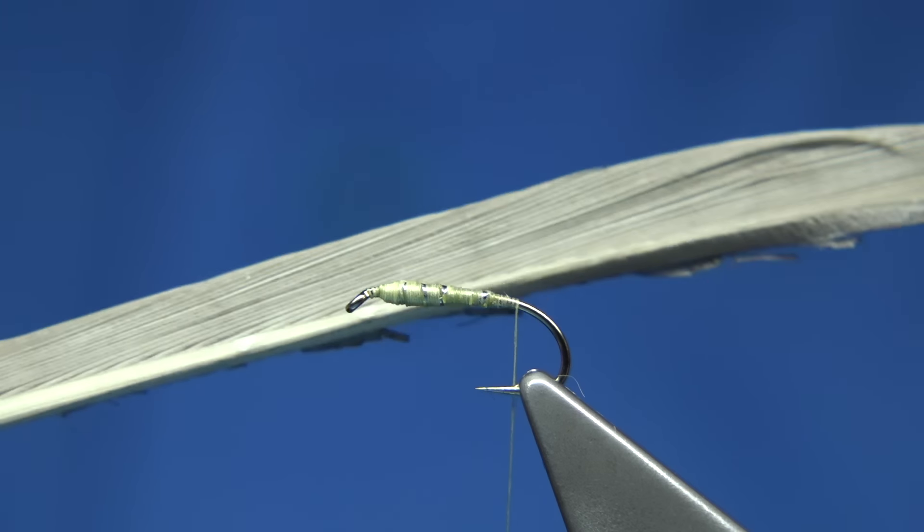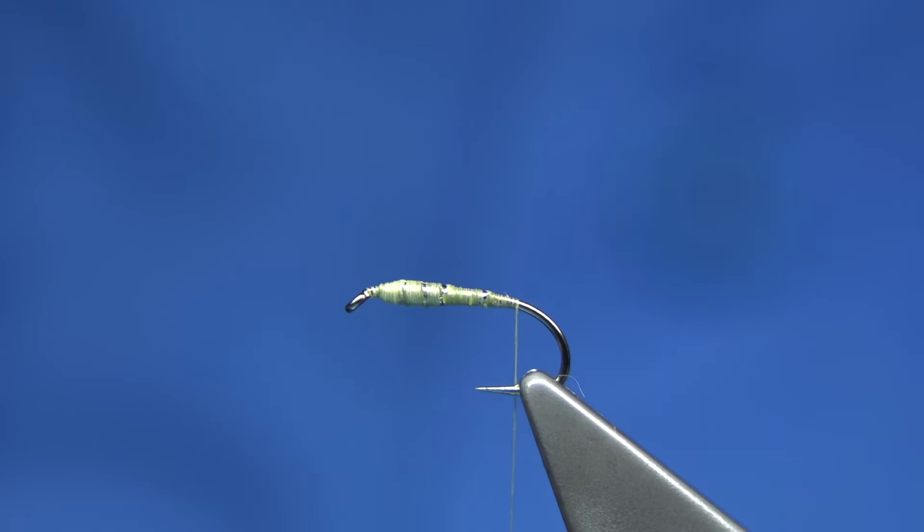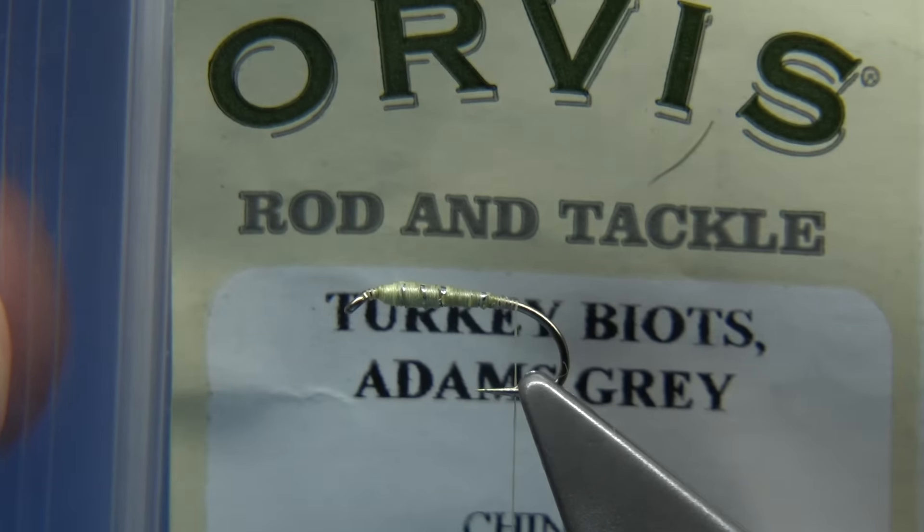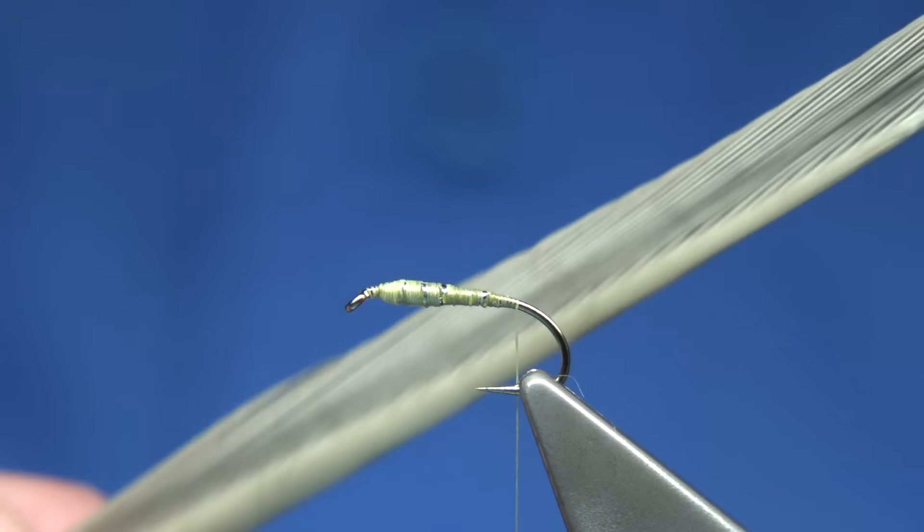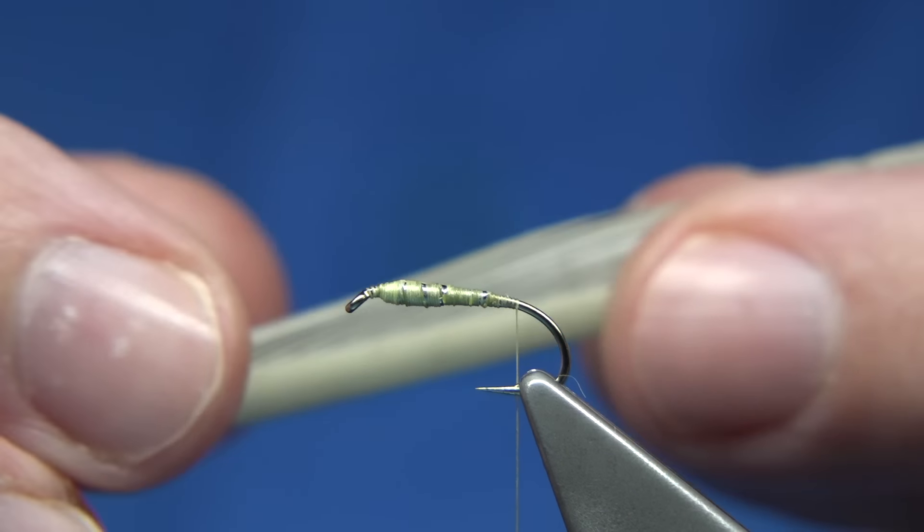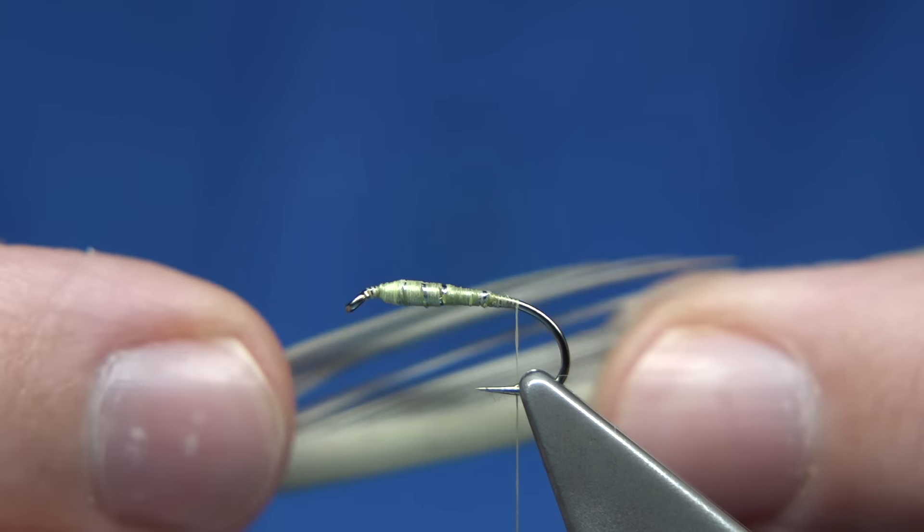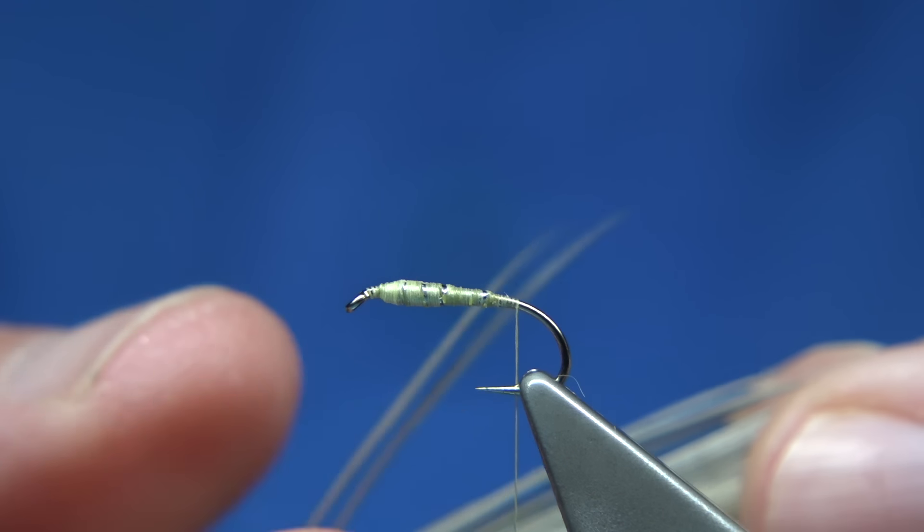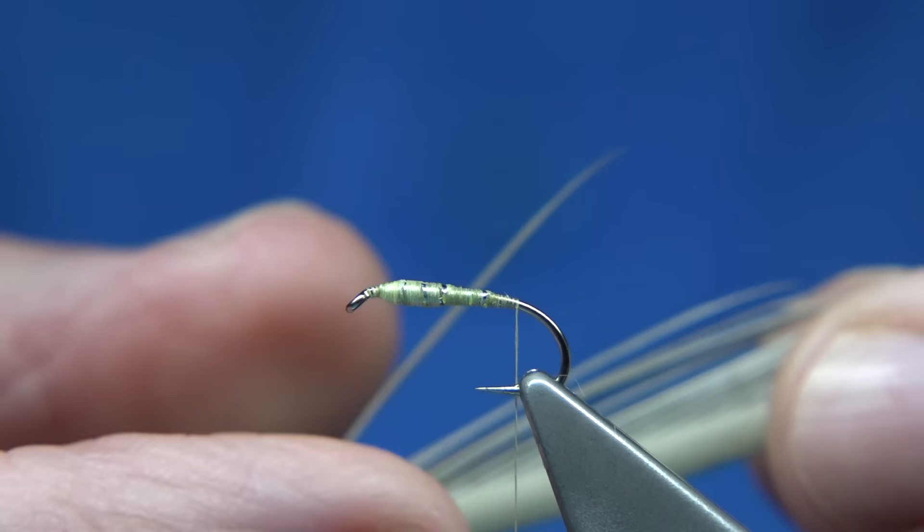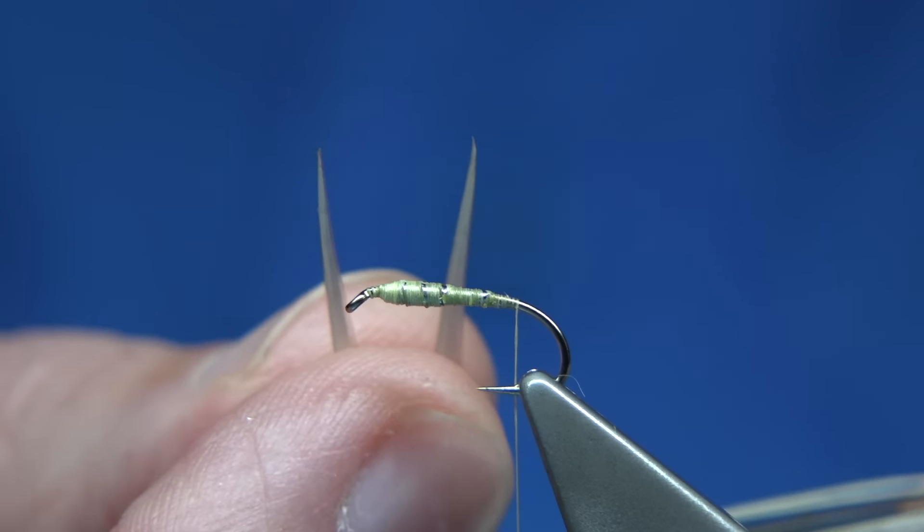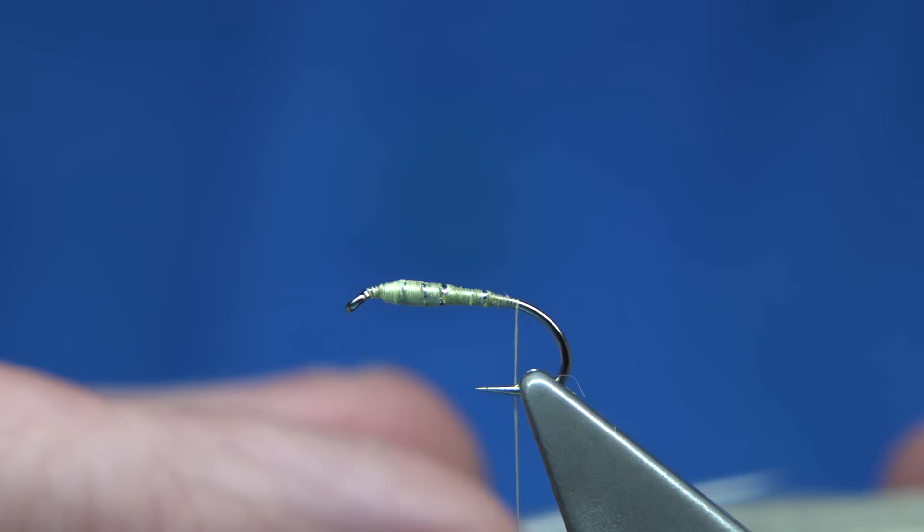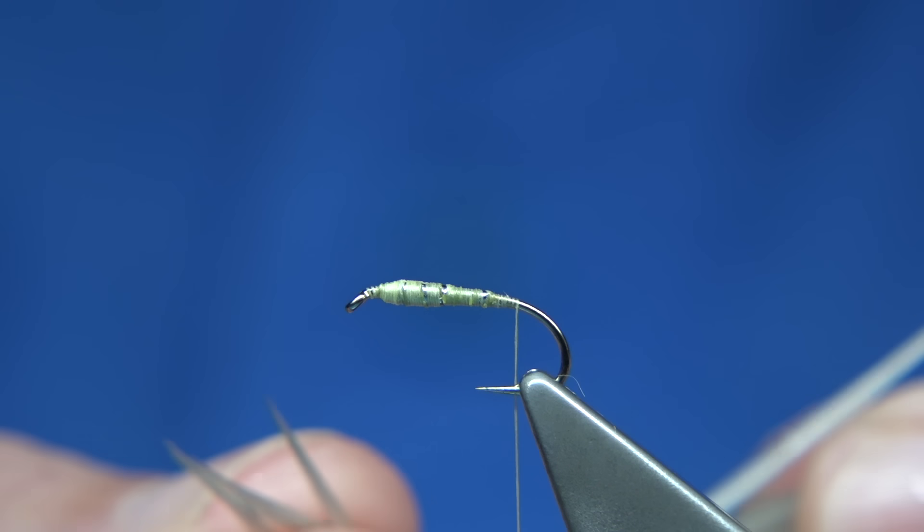Now I've got the turkey biot here, this is the Adams color. I'm going to show you, this one's from Orvis. Turkey biots, Adams grey. Originally I bought this for tiny Adams as a dry fly, but it's good for nymphs as well. So what I'm going to do is, the smaller fibers that are no good for the body, I'm actually going to use for the legs and the tail and the thorax cover, believe it or not.